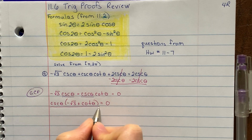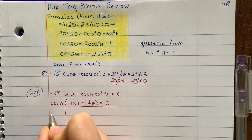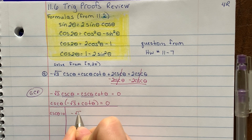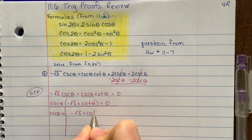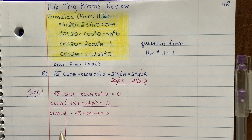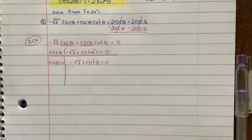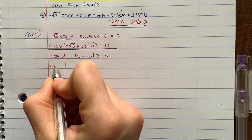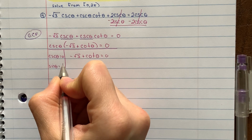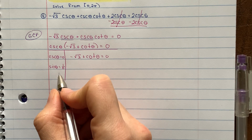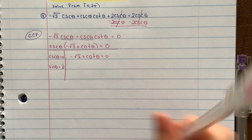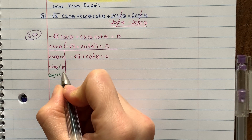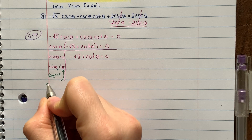Now I'll make my t-chart. On the left side, cosecant theta equals 0. I know cosecant is the reciprocal of sine, so this is really saying sine of theta equals 1 over 0. Well, 1 over 0 is an undefined fraction, so I'm going to cross that off and reject that side — writing down that it's undefined.